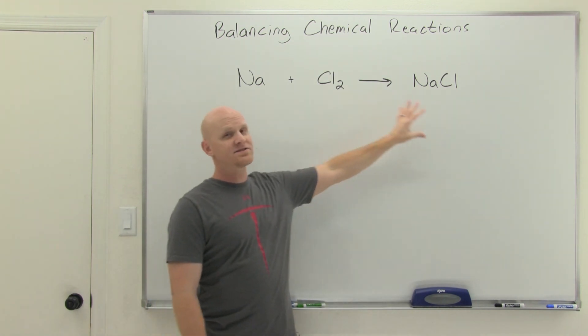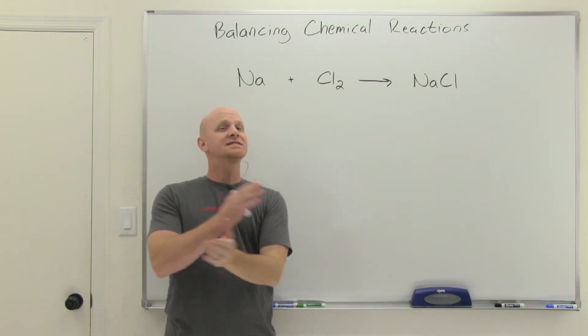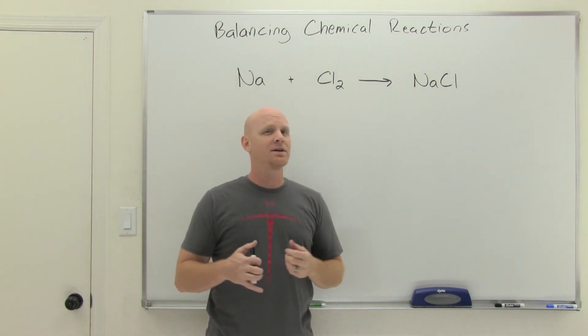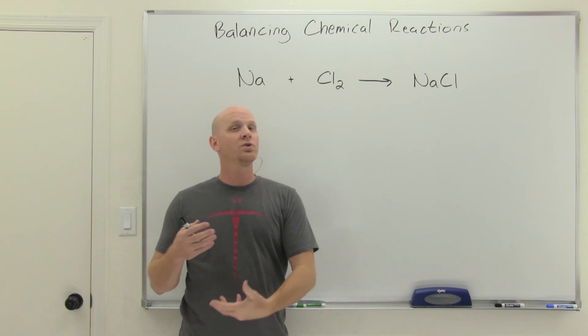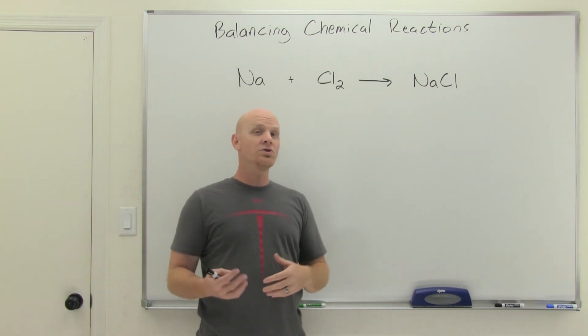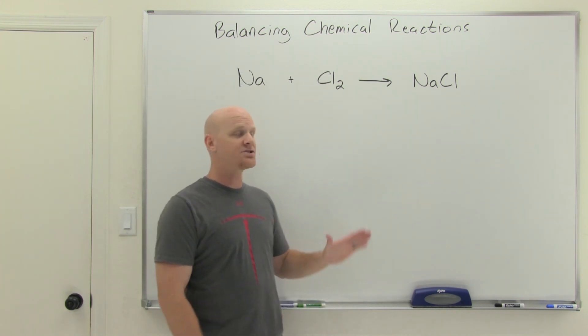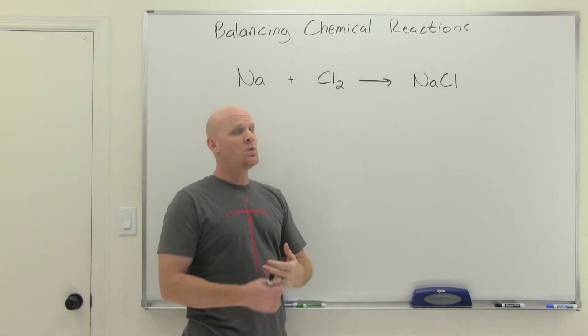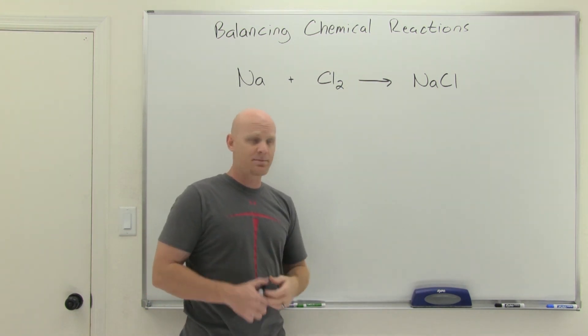All the atoms you have on the reactant side are going to still be present on the product side, just in different combinations. We're going to bond different elements to different things, and that's what actually is happening in a chemical reaction. But no new atoms are produced, and no new atoms are destroyed in a chemical reaction. And that's the principle behind why we're able to balance chemical reactions. We just have to balance all the atoms of each type of element.